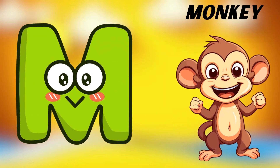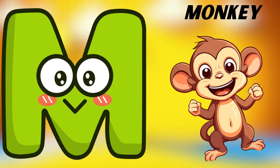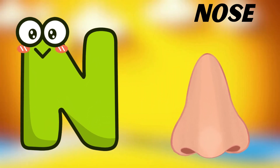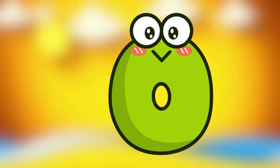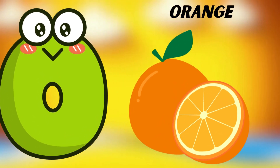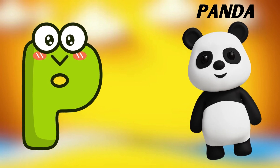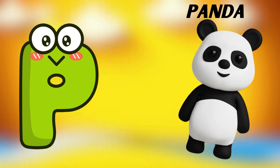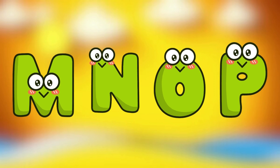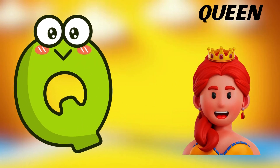M is for monkey, m-m-monkey. N is for nose, n-n-nose. O is for orange, o-o-orange. P is for panda, p-p-panda.